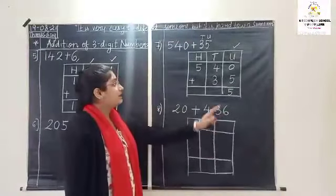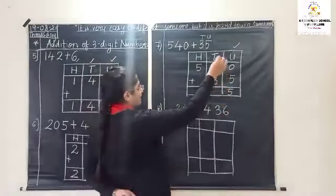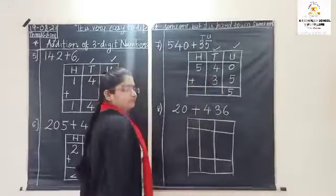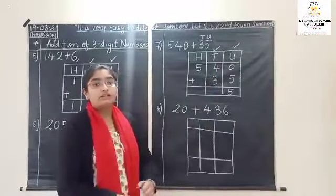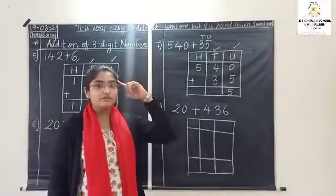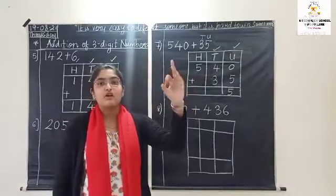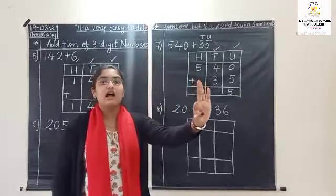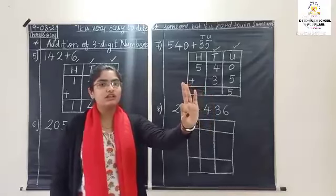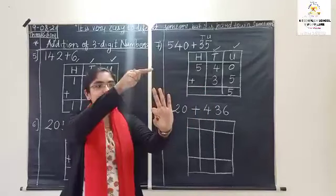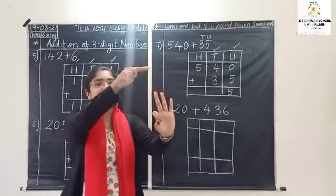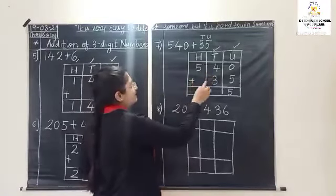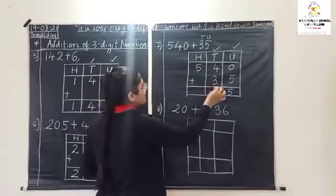Now come to tens place: four plus three. Keep four in mind, remove three fingers. After four — count with me: five, six, seven. So four plus three is seven.